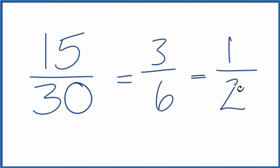These are all equivalent fractions. They have the same value. If you divide 15 by 30, 3 by 6, or 1 by 2, you'll end up with the same answer, 0.5.